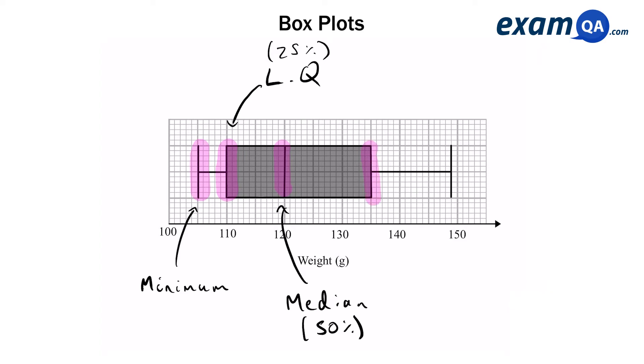And the next line is our upper quartile. This is similar to the lower quartile but it's the number where 75% of your data is below that value and 25% is above it. And the last line we have on the right is our maximum value.